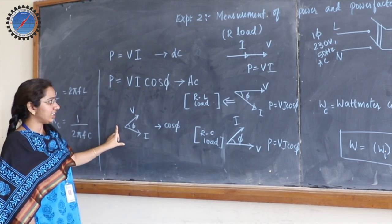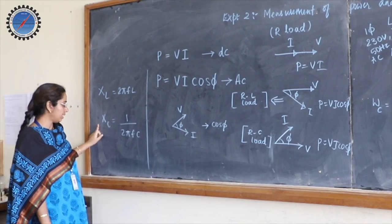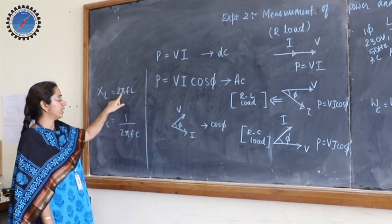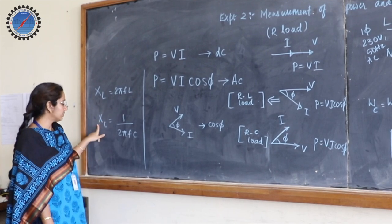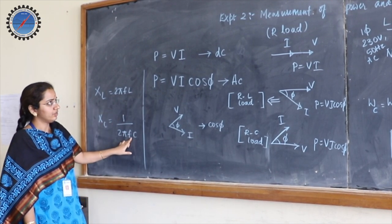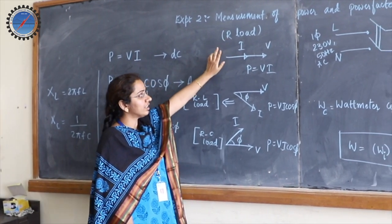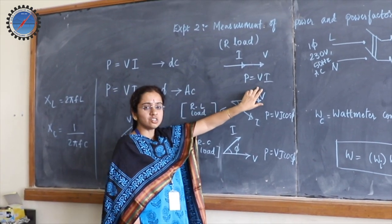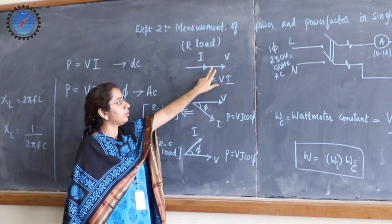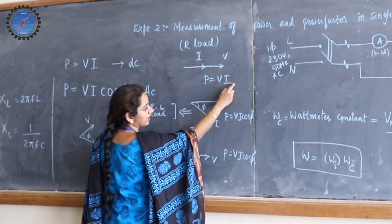Whenever we have an AC network, we may have an inductive reactance or a capacitive reactance. Inductive reactance is given by 2πFL, and capacitive reactance is 1/(2πFC). A resistor is independent of frequency. In a resistive network, the voltage and current are in phase, meaning the angle between V and I is 0, so cos(0) equals 1.